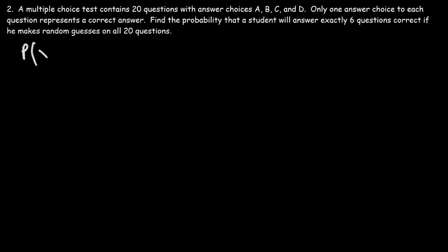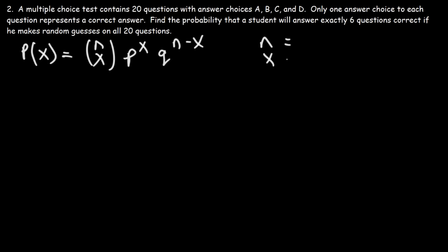So let's begin with the formula: nCx times the probability of success raised to the x power, times the probability of failure raised to the n minus x. Now, what are the variables n, x, p, and q in this problem?